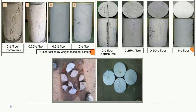In the split tensile strength test, for 1 percent fiber content there are not many cracks on the cross section of the concrete cylinder, whereas for 0 percent, 0.25 percent, and 0.5 percent you can see some cracks. At 1 percent, cracks have developed but they are very light compared to the other three percentages.